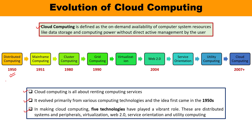This limitation is overcome in the next three computing paradigms: mainframe computing, cluster computing, and grid computing. Mainframe computing refers to very powerful and reliable computing machines responsible for handling massive amounts of data. Even nowadays, we use mainframe computing for bulk processing.